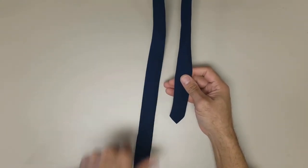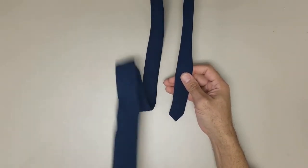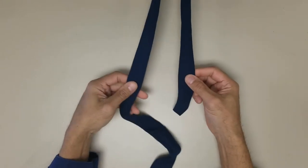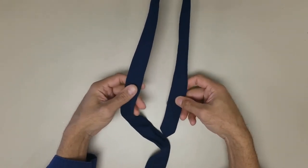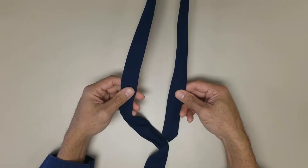Begin with the wide end of the tie on the right and the small end of the tie on the left. The tip of the small end should rest slightly above your belly button. This will vary based on your height and the length and thickness of the tie.